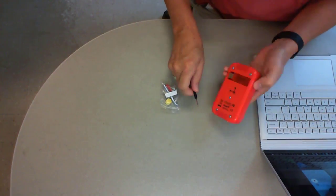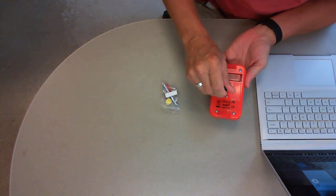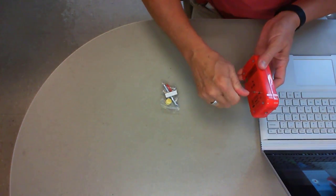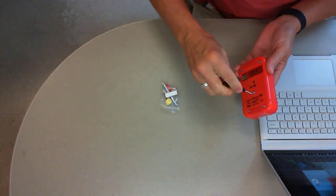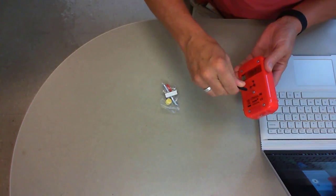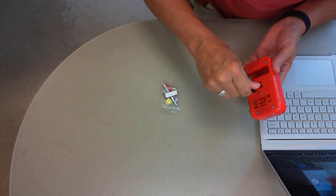The screwdriver is useful for opening up the back of the device if you want to put in new batteries. The battery cover is that thing with a screw in the middle at the back.